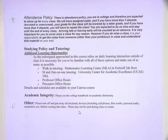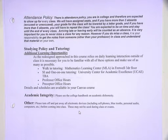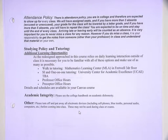There is an attendance policy. You're in college, therefore you're expected to show up for every class. We will have assigned seats. If you have more than three absences — excused or unexcused — your grade will be lowered by a letter grade. More than three means four or more. If you miss three classes, you've already missed a week of this stuff, and you can't afford to miss a week of calculus. Everything we do builds on the next day. I'm videotaping my lectures, so it'll be easier to get caught back up, but university policy — coming from the UNC system — requires an attendance policy.